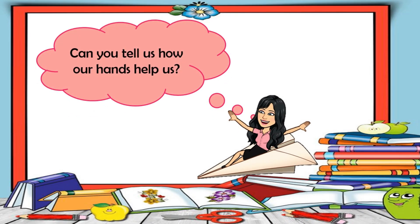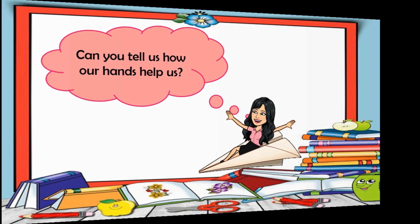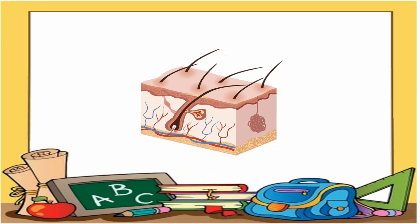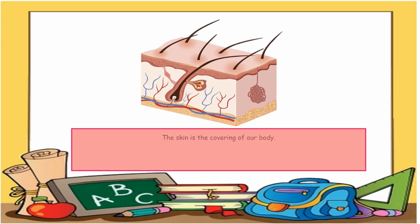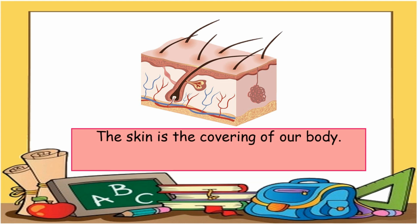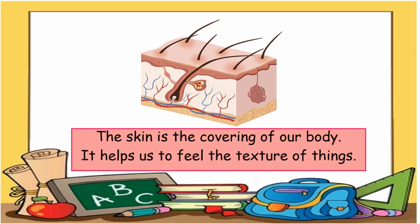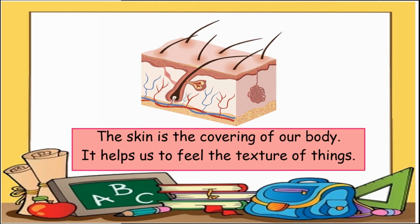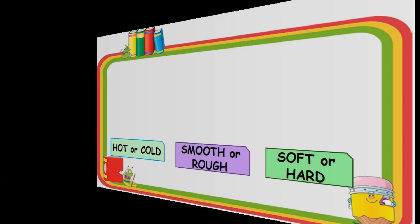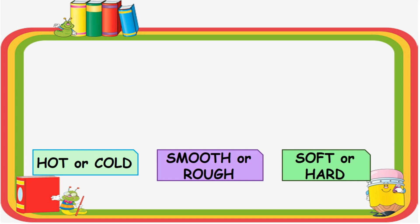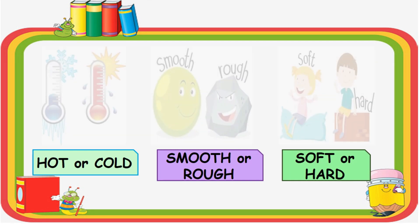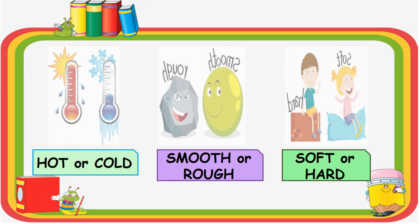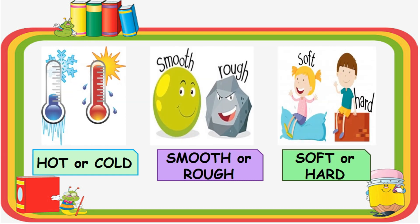Can you tell us how our hands help us? The skin is the covering of our body. It helps us to feel the texture of things. Our skin makes us feel if the object is hot or cold, smooth or rough, or soft or hard.